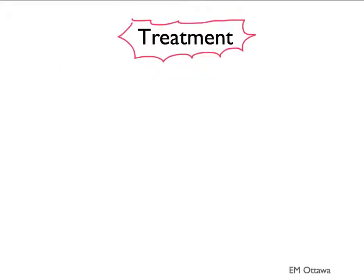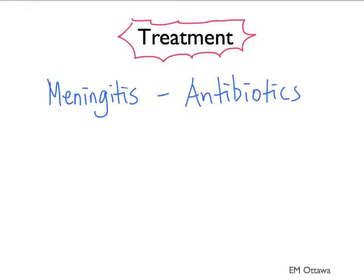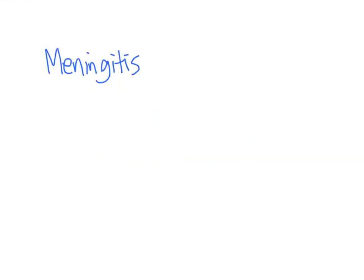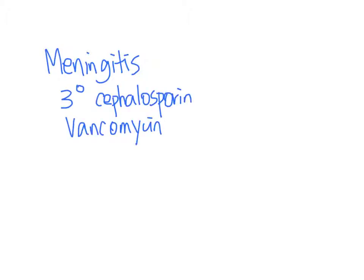The main treatment is antibiotics for meningitis and antivirals for encephalitis. Even though some meningitis would turn out to be not bacterial in origin, we still want to start them on antibiotics, since the mortality and morbidity for bacterial meningitis is so high. Antibiotic choice for meningitis can include a third-generation cephalosporin, vancomycin, and depending on the age group, ampicillin.